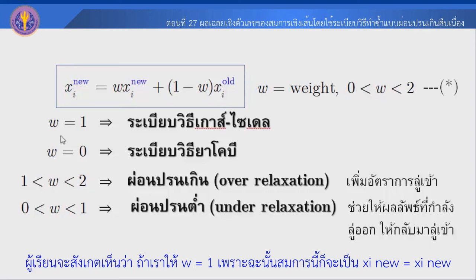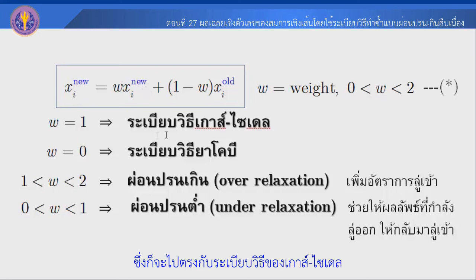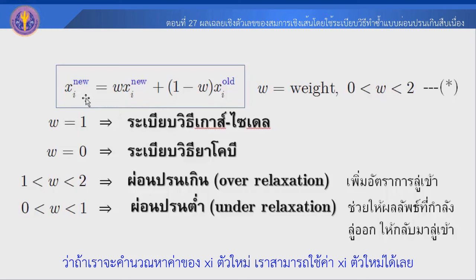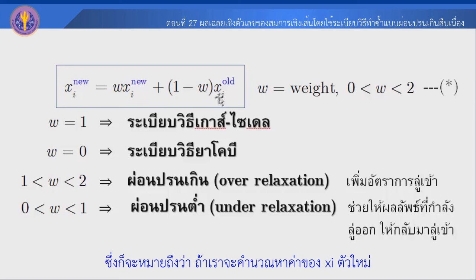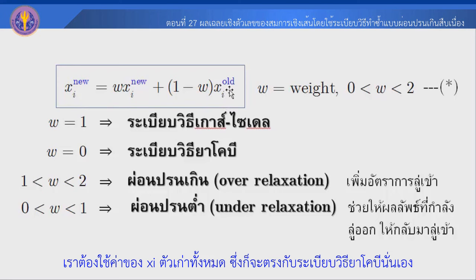If we have W equals to 1, then Xi-new will reduce to Xi-new from Gauss-Seidel, which is going to reproduce the Gauss-Seidel method. If we set W equal to 0, then Xi-new equals Xi-old, which means we use the old value of Xi — this gives the Jacobi method.